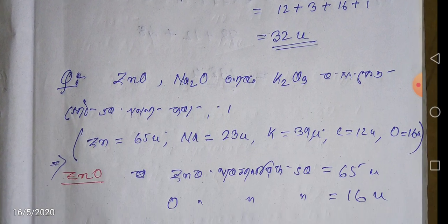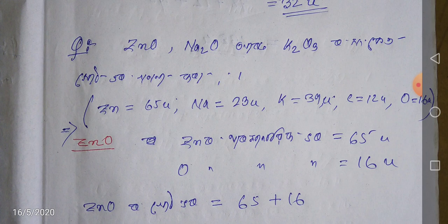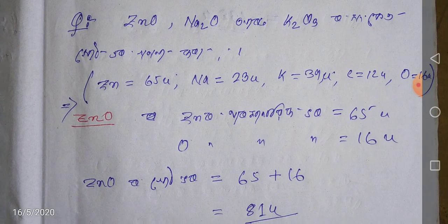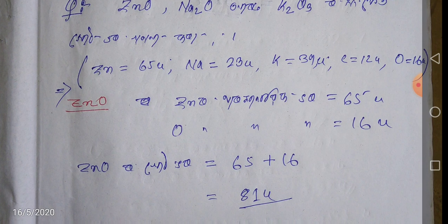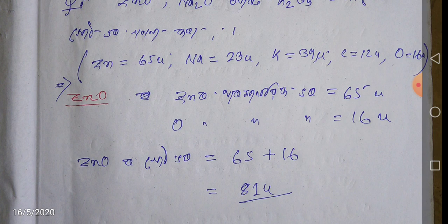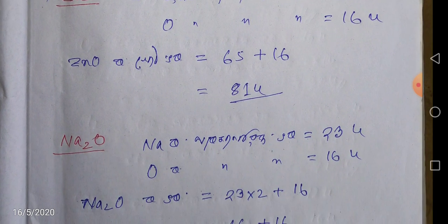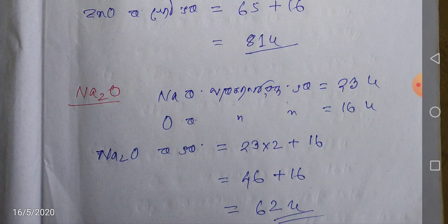The next episode is ZnO — Zinc Oxide — Sodium Oxide and potassium nitride. Sodium is 23. Na2O is 62.